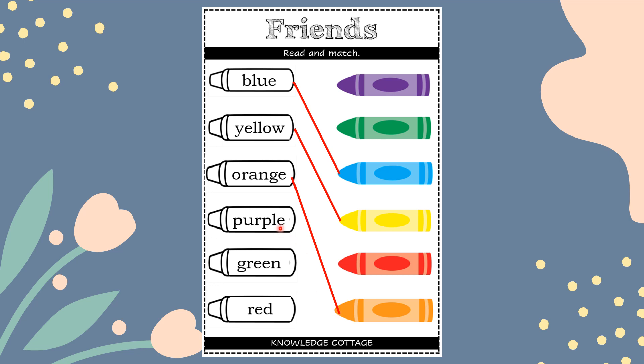The next one is purple. There it is — I bet you found that too. The next one is green. Did you find the green crayon? There it is. And the last one — remember, it's my favourite colour, which is red. Here it is.